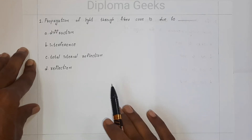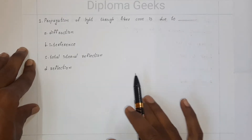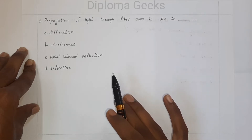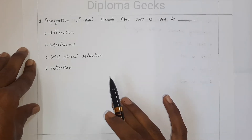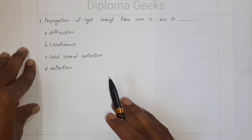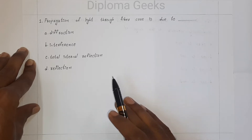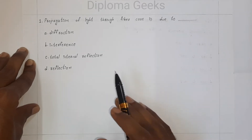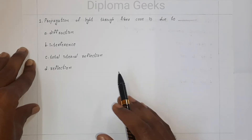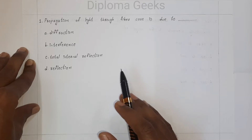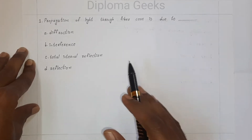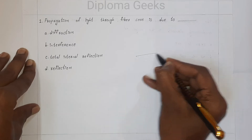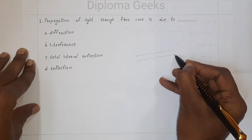Propagation means that a light ray, which is in the form of an electromagnetic wave, transfers its energy from one point to another point. When a light ray transfers its energy in the form of an electromagnetic wave from one point to another, it is called propagation of light through fiber core.